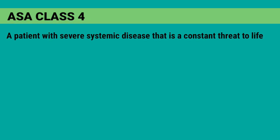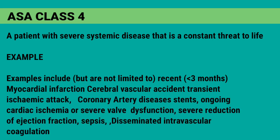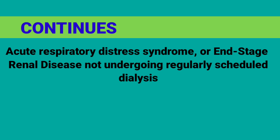ASA Class 4 is a patient with severe systemic disease that is a constant threat to life. Examples include recent myocardial infarction within 3 months, cerebrovascular accident, transient ischemic attack, coronary artery disease with stents, ongoing cardiac ischemia or severe valve dysfunction, severe reduction of ejection fraction, sepsis, disseminated intravascular coagulation, acute respiratory distress syndrome, or end-stage renal disease not undergoing regularly scheduled dialysis.